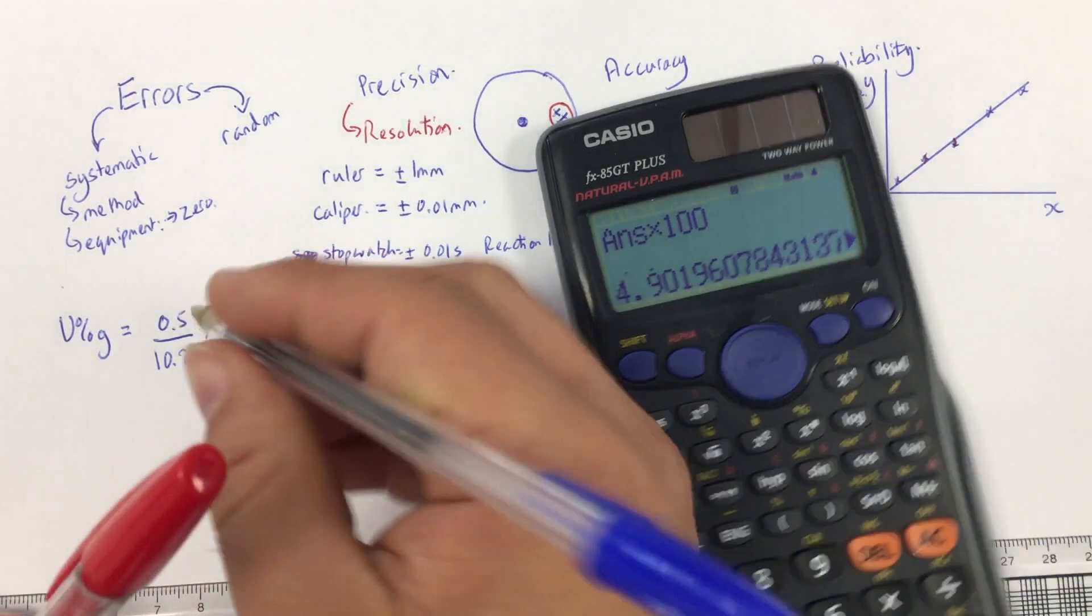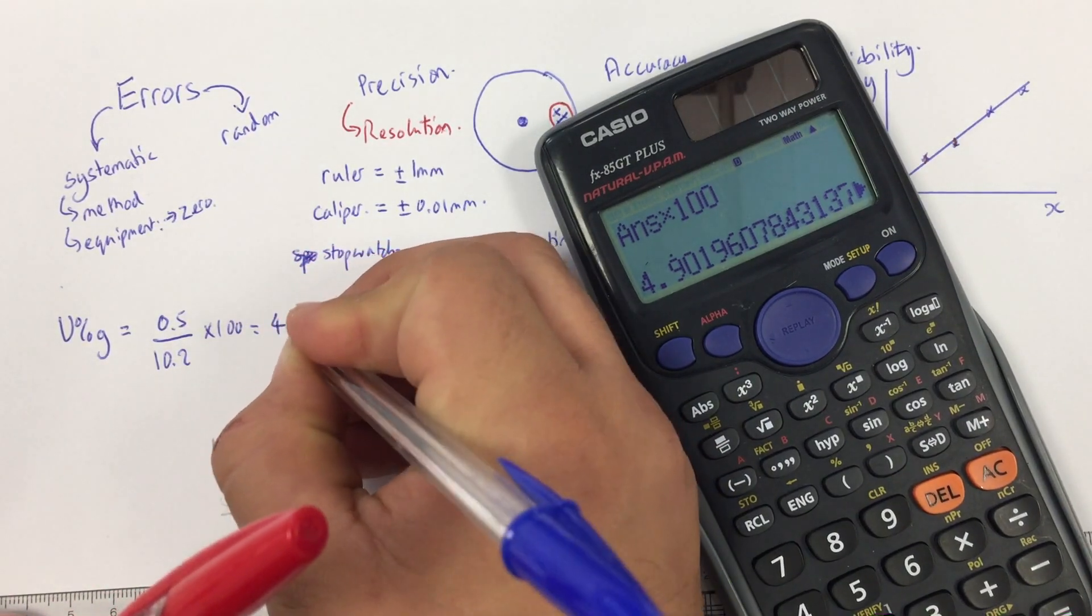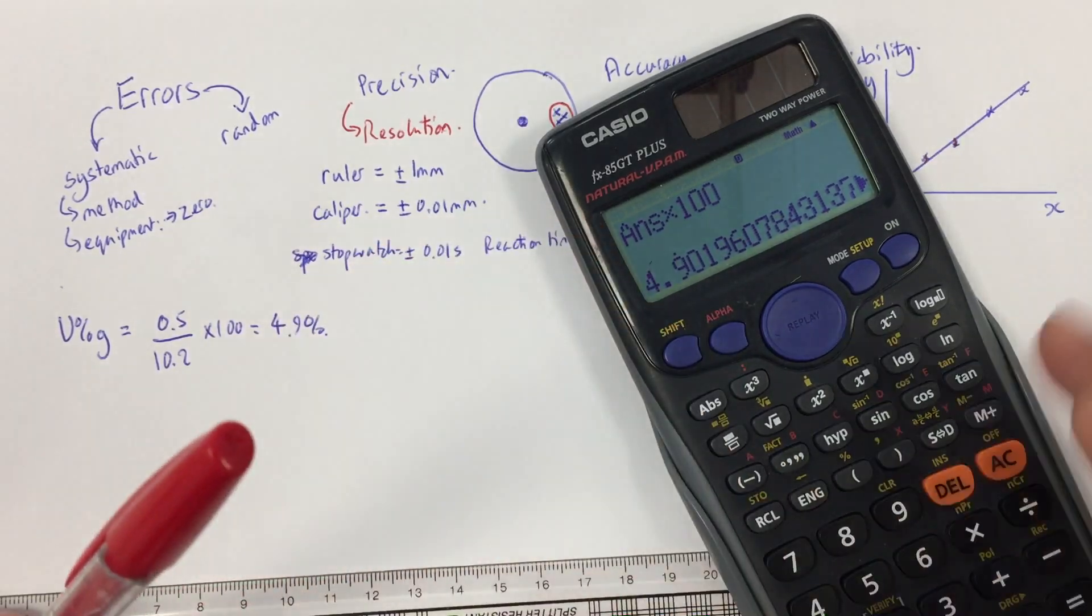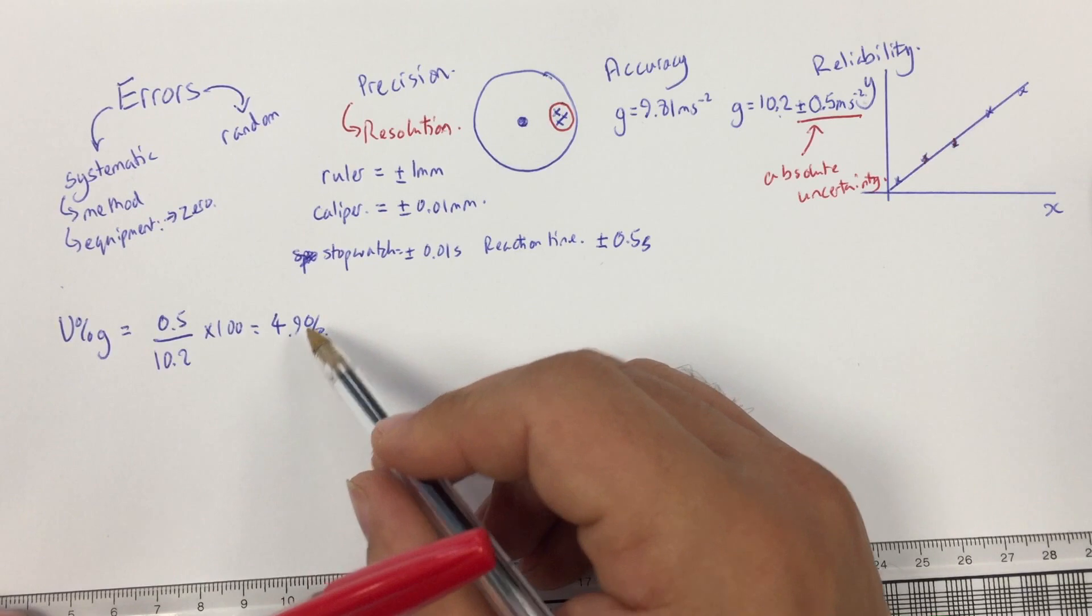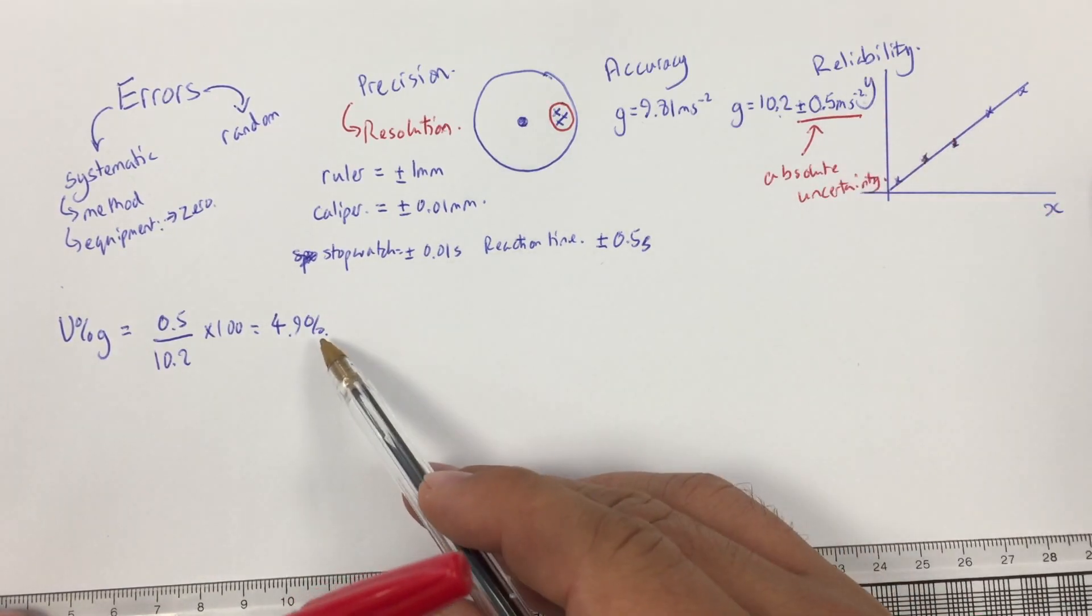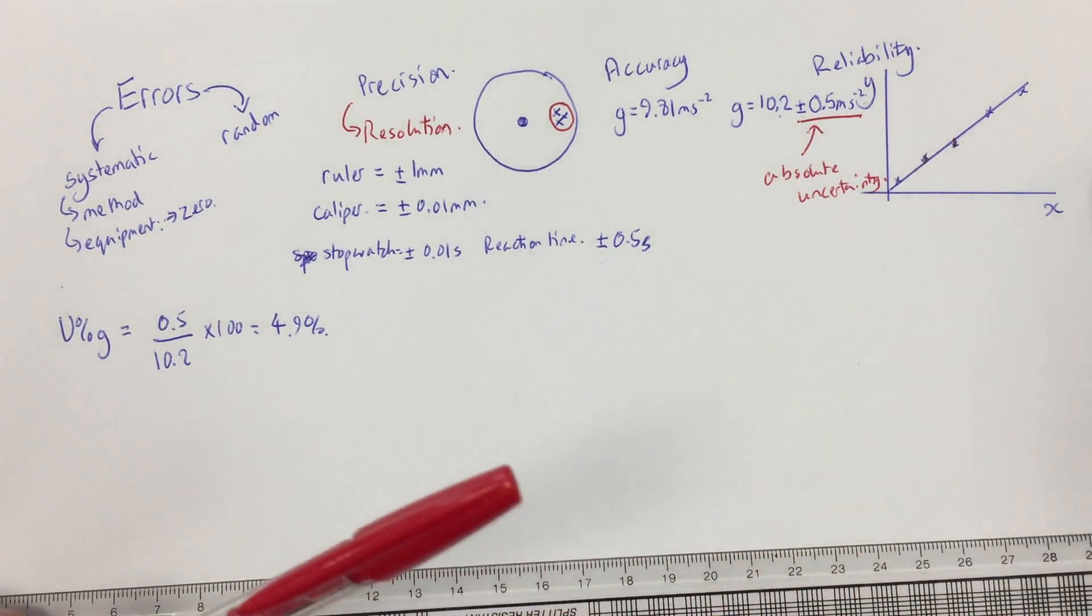So, that's my percentage uncertainty. Okay? So, I have my absolute uncertainty. I also have my percentage uncertainty. We use them in different ways, as we'll see.